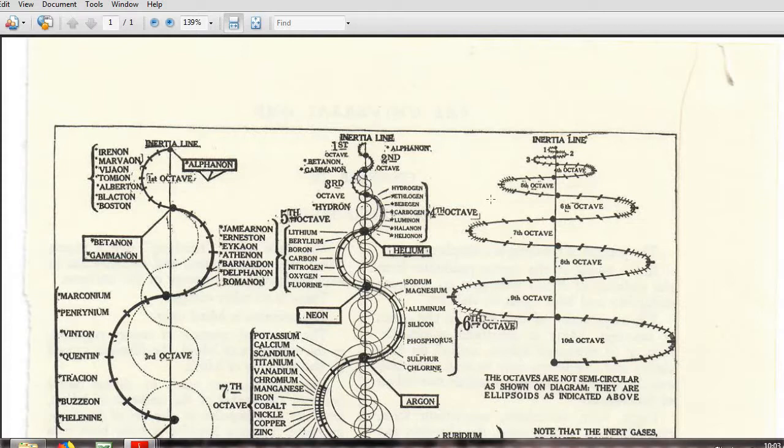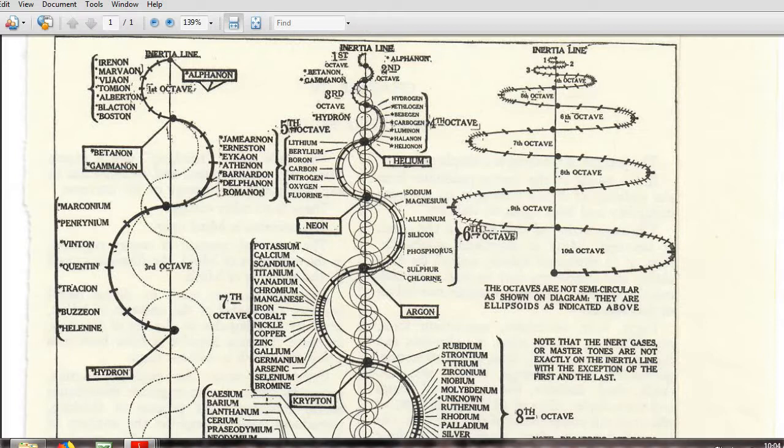So this is another view of the 10 octave cycle going from the first, the beginning and the end in the first octave. And he named it alpha non. But really, we start with hydrogen in the fourth octave and the fifth octave, which is carbon right here. And there's three or four of these, all the way up to the ninth from the fourth through the ninth octave are common elements that scientists use every single day.